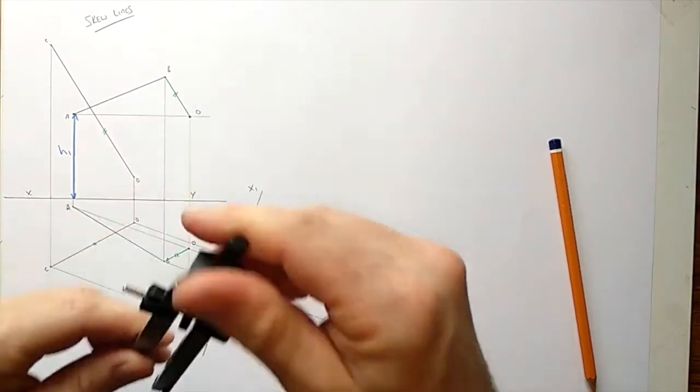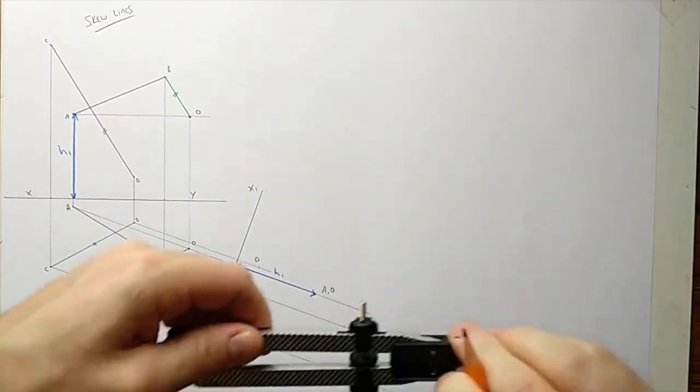And finally D. Now what I'm expecting is two parallel lines. I want you to think about why if you can figure it out in your head.